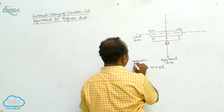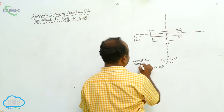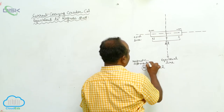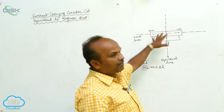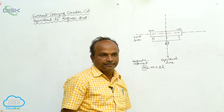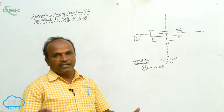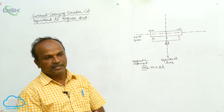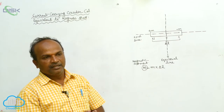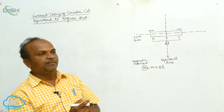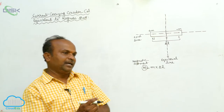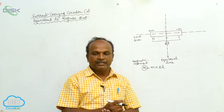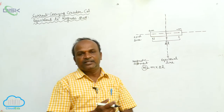This quantity is called magnetic moment. This is the bar magnet having north and south poles. The pole strengths are represented by plus M and minus M respectively. The magnetic length is 2L.